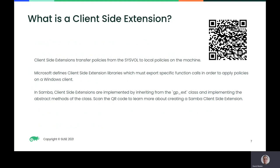Client-side extensions transfer policies from the SysVol to local policies on the machine. Microsoft defines client-side extension libraries which must export specific function calls in order to apply policies on a Windows client. In Samba, client-side extensions are implemented by inheriting from the GP extension class and implementing the abstract methods of the class. Scanning the QR code on screen will direct you to a blog post explaining in detail how to create a Samba client-side extension.